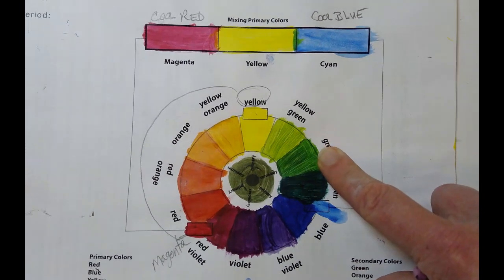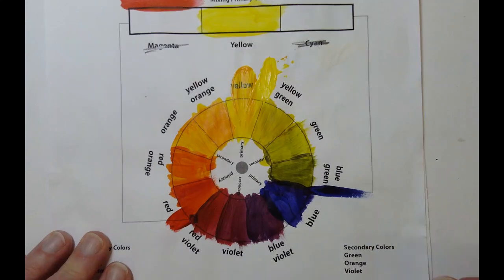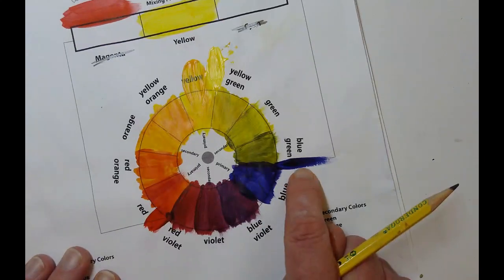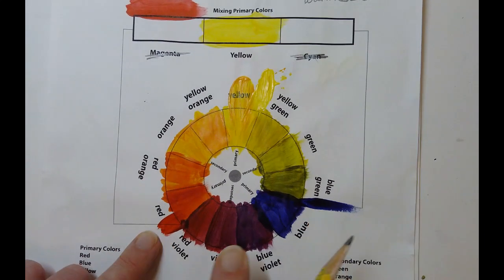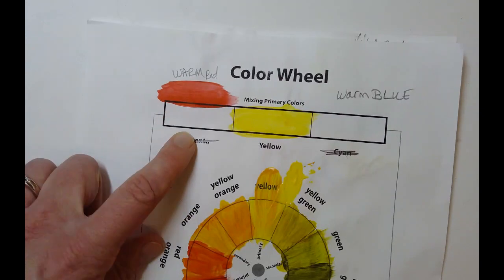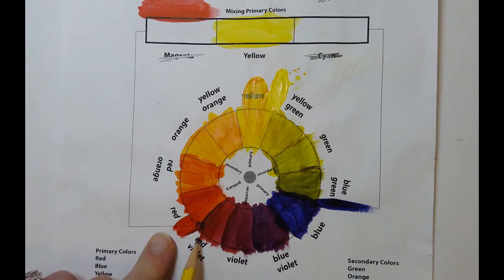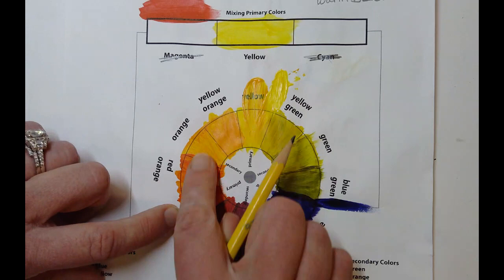If instead of using the cool red or cool blue, you're using warm red or warm blue, which is right here. A warm red is really truly just red. It's not magenta. It's just what you would make if you mixed magenta with a tiny, tiny little bit of yellow, and you end up with this.